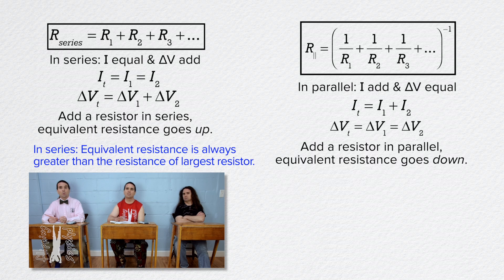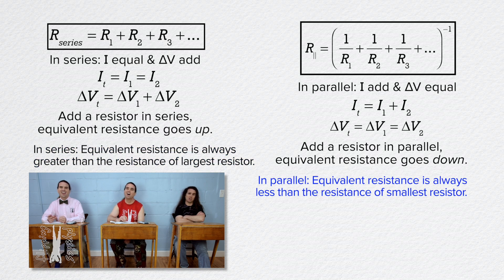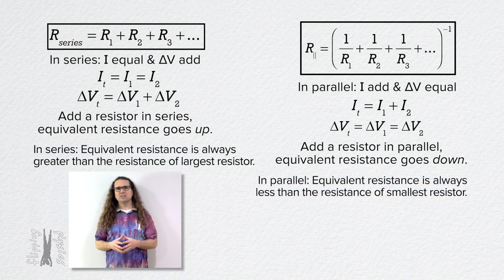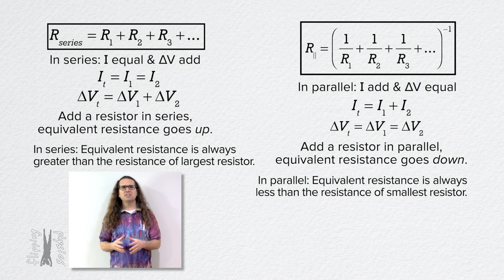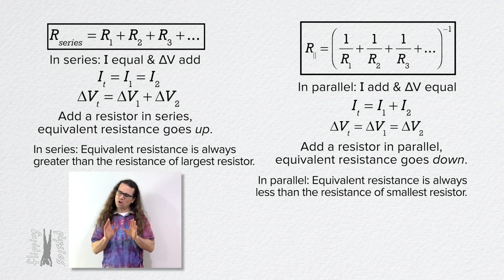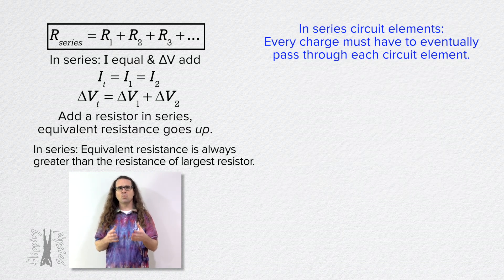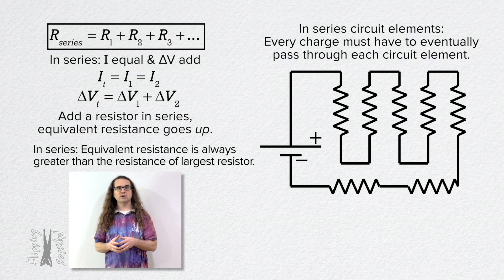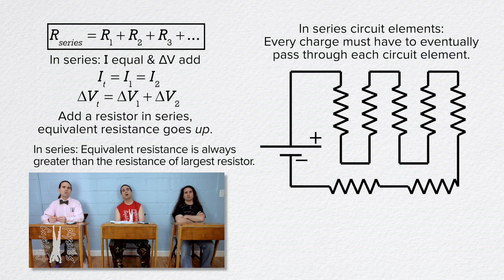It may seem obvious in simple circuits, but it is important to identify when circuit elements are in series or in parallel, and to realize that sometimes they are in neither. For series: if every charge that goes through one element also has to go through the other element, those two circuit elements are in series. For example, all the resistors in a circuit where every charge passes through every resistor are in series — even if they appear to be drawn parallel to one another, that is just how the circuit was drawn.